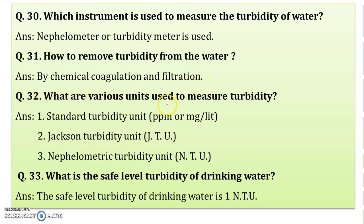What are the various units used to measure turbidity? First is the standard turbidity unit — ppm, that is parts per million or mg per liter. Next is JTU, the Jackson Turbidity Unit. And the third is NTU, the nephelometric turbidity unit, which we use with the nephelometer to determine turbidity of a water sample.